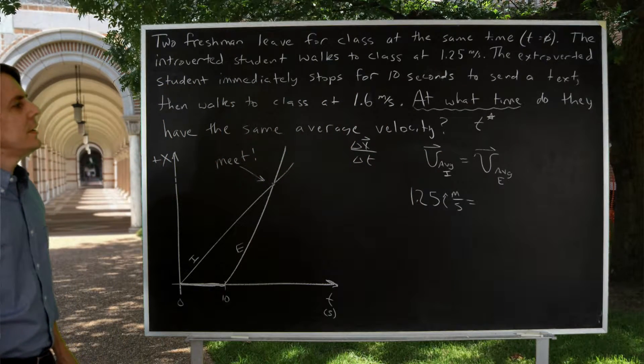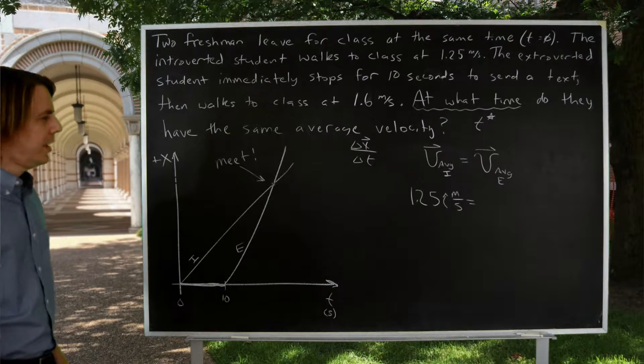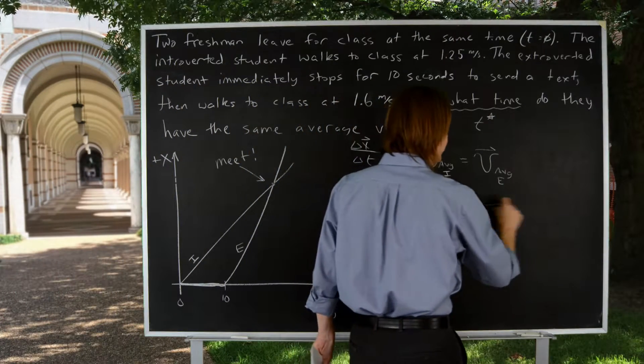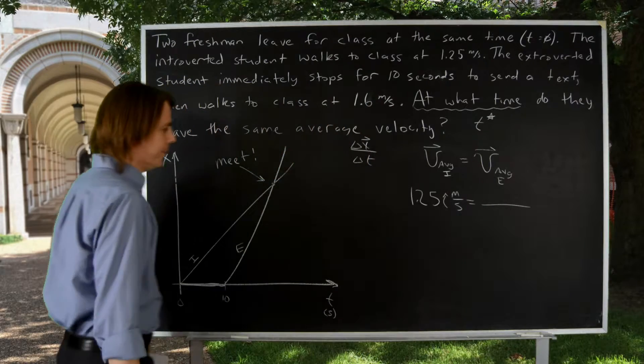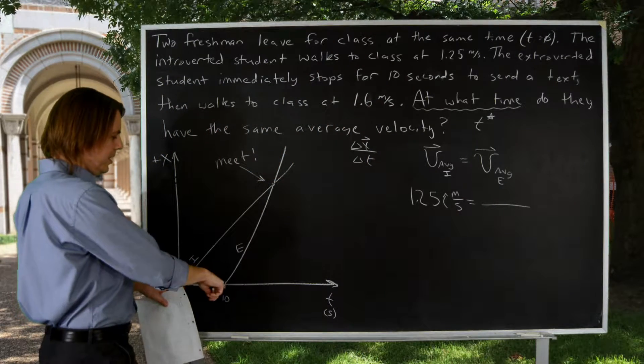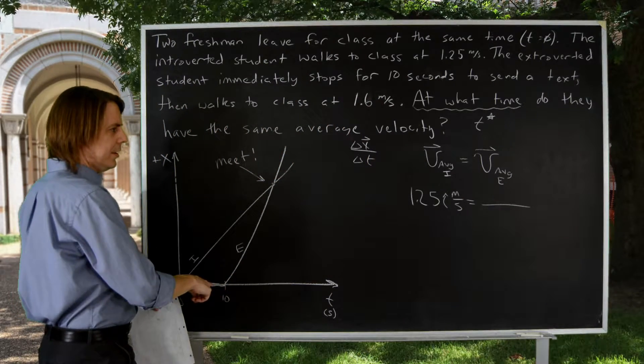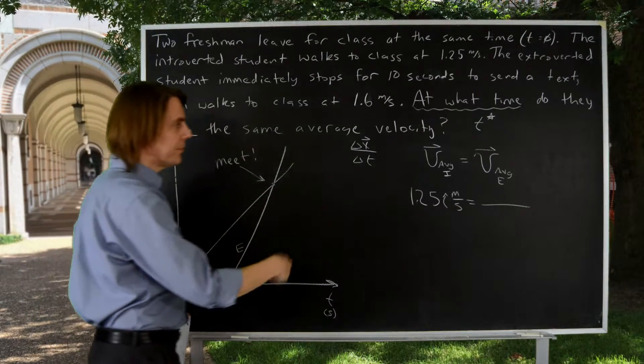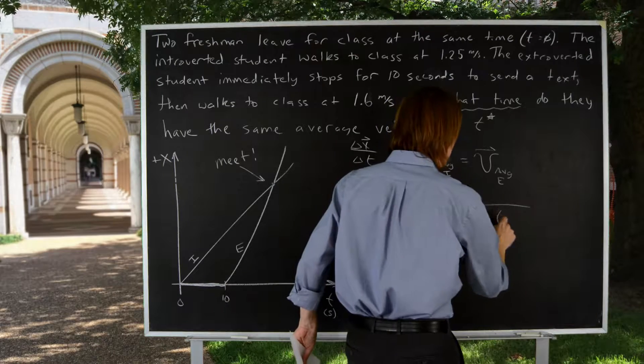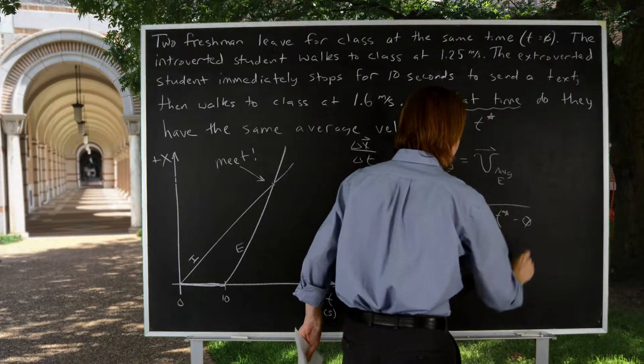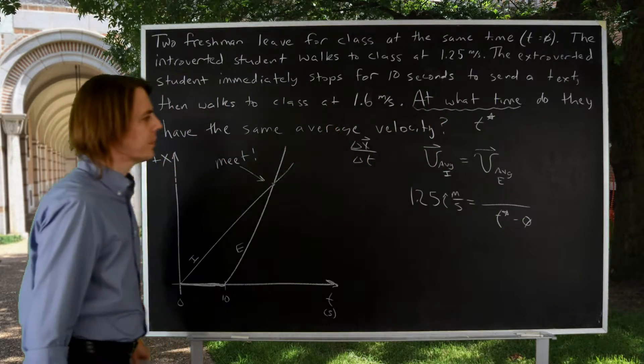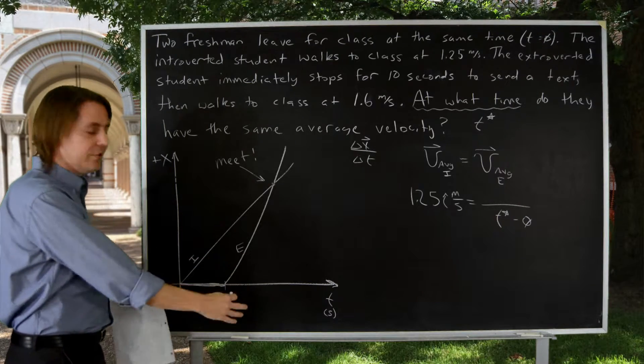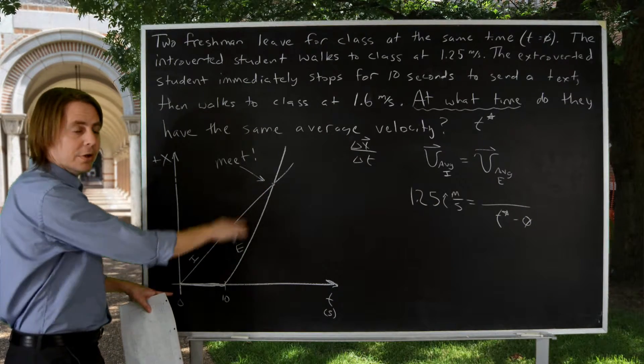But the extroverted student, now we're going to think about the definition of average velocity here. It's going to be their displacement over delta T. All right, so the delta T is just T star minus zero. We know we're looking for the specific time T star. So T star minus zero, of course that's just T star. And now we need the displacement between zero and T star. How far did they go?